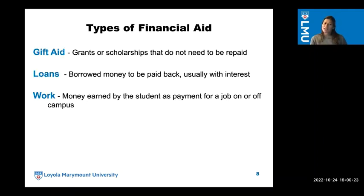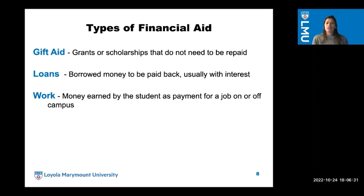Types of financial aid: the one we all like the most is our gift aid — grants or scholarships that do not need to be repaid. Then we have loans, which is borrowed money that we have to pay back, usually with interest. And then we have work, which is money earned by the student as payment for a job on campus.